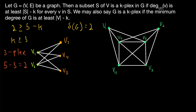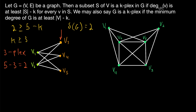The greater the value of k, the weaker the restriction. Remember that in a three-plex, each vertex is allowed to not be adjacent to at most three vertices. If we look at vertex v3, for example, it is not adjacent to v3, v4, and v5 — so that's allowable. It's not adjacent to three vertices, and that's true for every vertex in this graph. It is a three-plex.